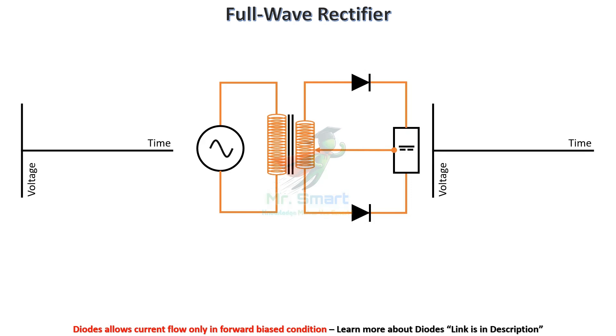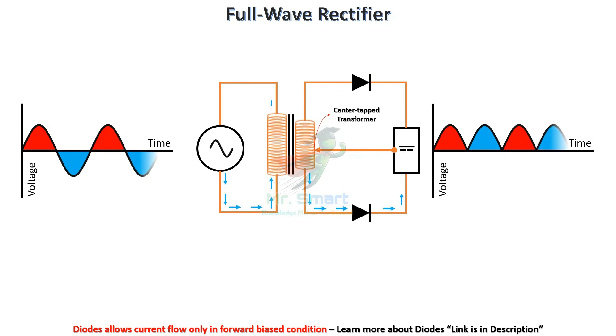A full-wave rectifier uses both halves of the AC wave, making it more efficient than a half-wave rectifier. It requires a center-tap transformer and two diodes to achieve this.